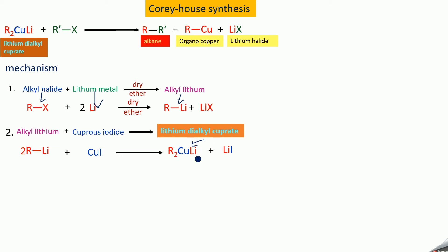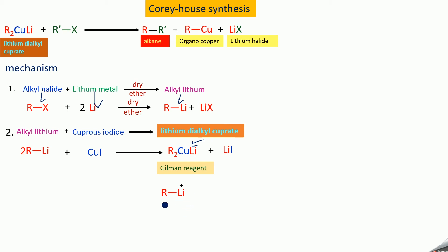So this is what we call lithium dialkyl cuprate. This lithium dialkyl cuprate was prepared by Henry Gilman, and it is called the Gilman reagent in his honor. In this reagent, you have R-Li where lithium is electropositive, so it has a positive sign and R gets a negative sign — this is a carbanion.